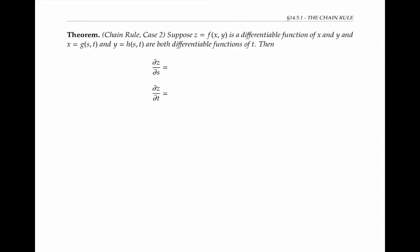There's also a version of the chain rule when z is a differentiable function of more than one variable, here x and y. And those variables x and y are themselves differentiable functions of more than one variable, here s and t. Again, I can use a tree diagram to find the formulas. Z is a function of x and y, and x and y are both functions of s and t. I'll write the partial derivatives along the branches.